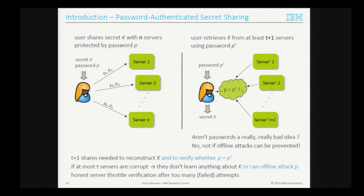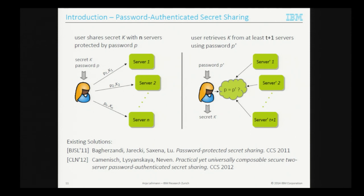This looks like the perfect tool for our application, and there were already solutions out there. This concept was proposed at CCS 2011, and a year later a one-out-of-two secret sharing scheme with improved efficiency was proposed. But we are not fully satisfied with those solutions, because they not only require the user to remember password P prime, but also to securely remember some of the servers — or at least one — that they initially trusted at setup.